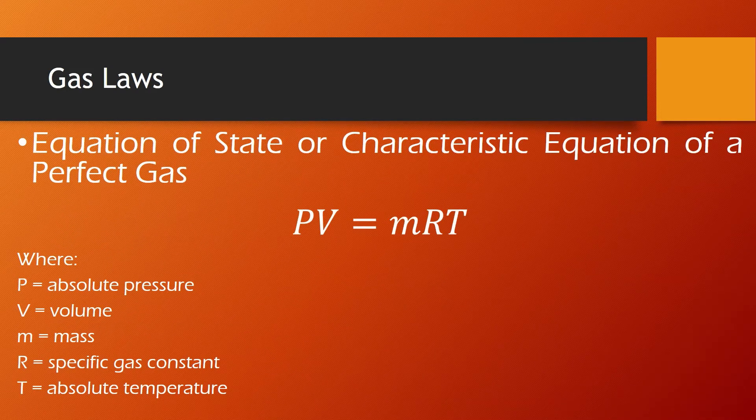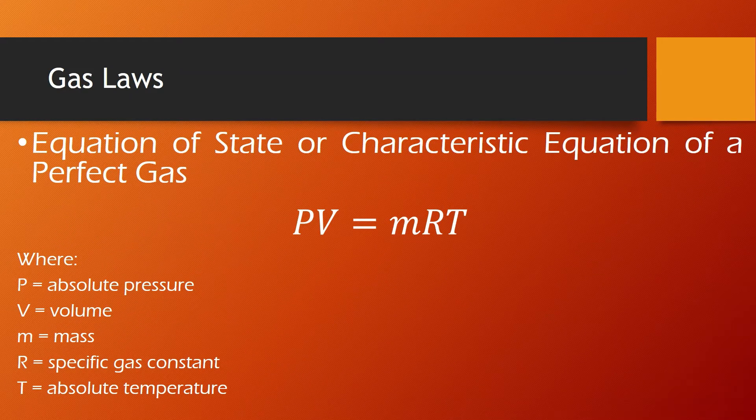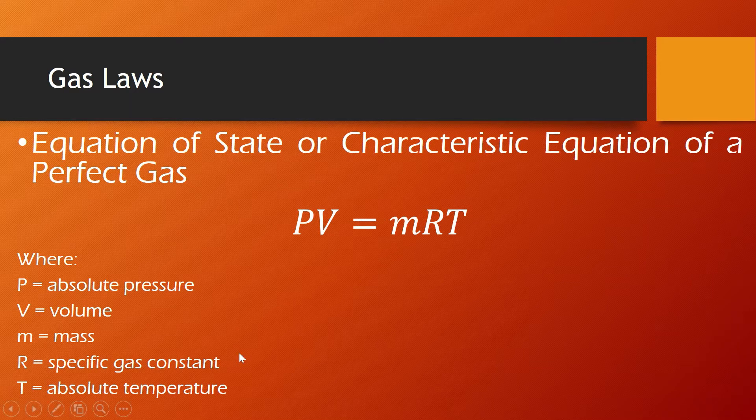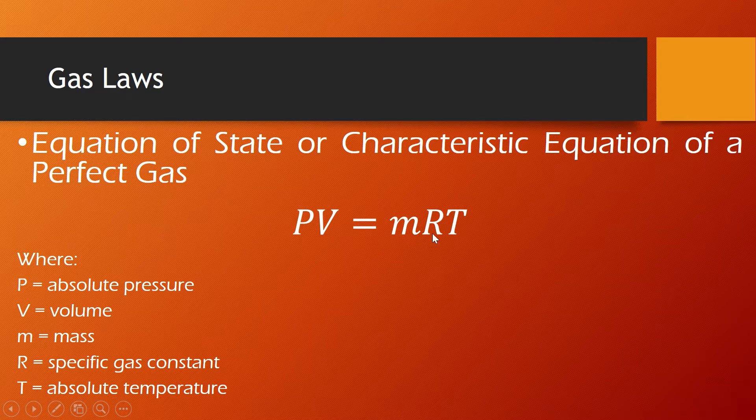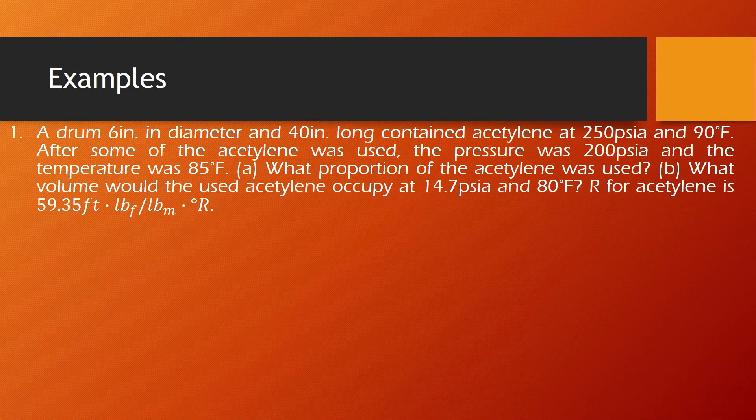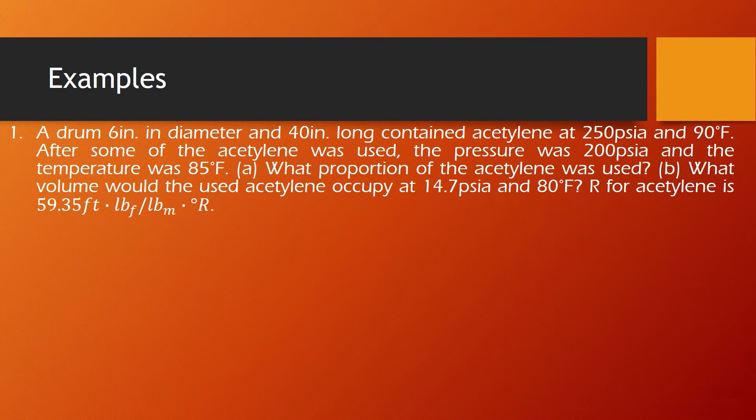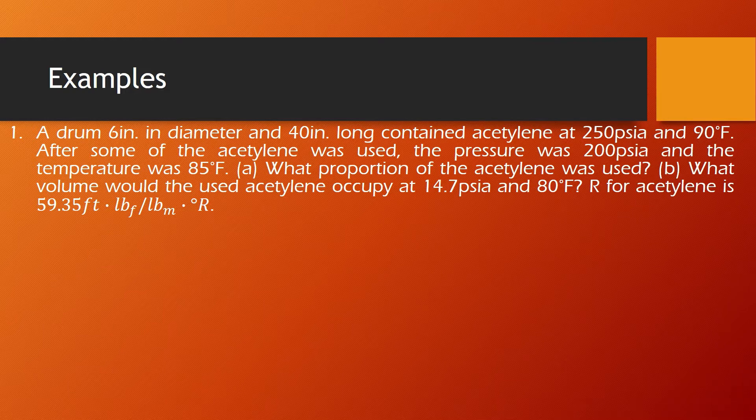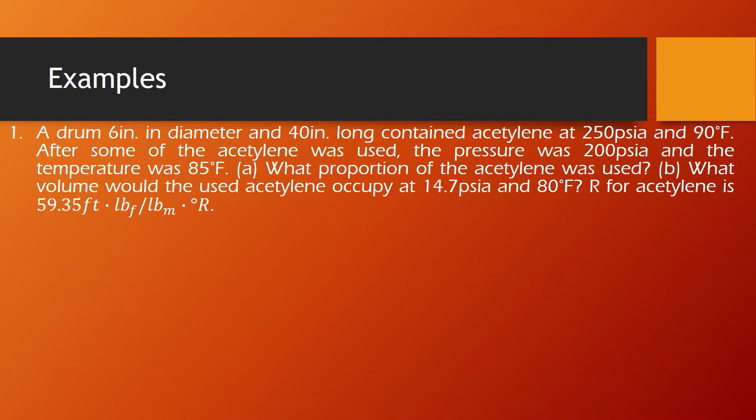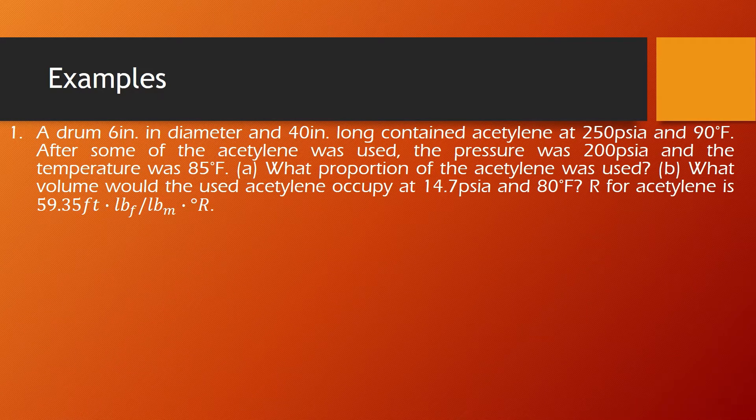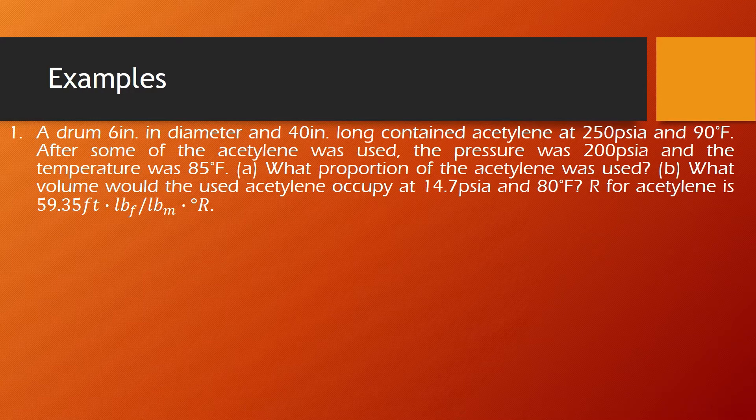And then the equation of state or characteristic equation of a perfect gas is stated in this equation. And so for example, a drum 6 inches in diameter and 40 inches long contained acetylene at 250 psia and 90 degrees Fahrenheit. After some of the acetylene was used,